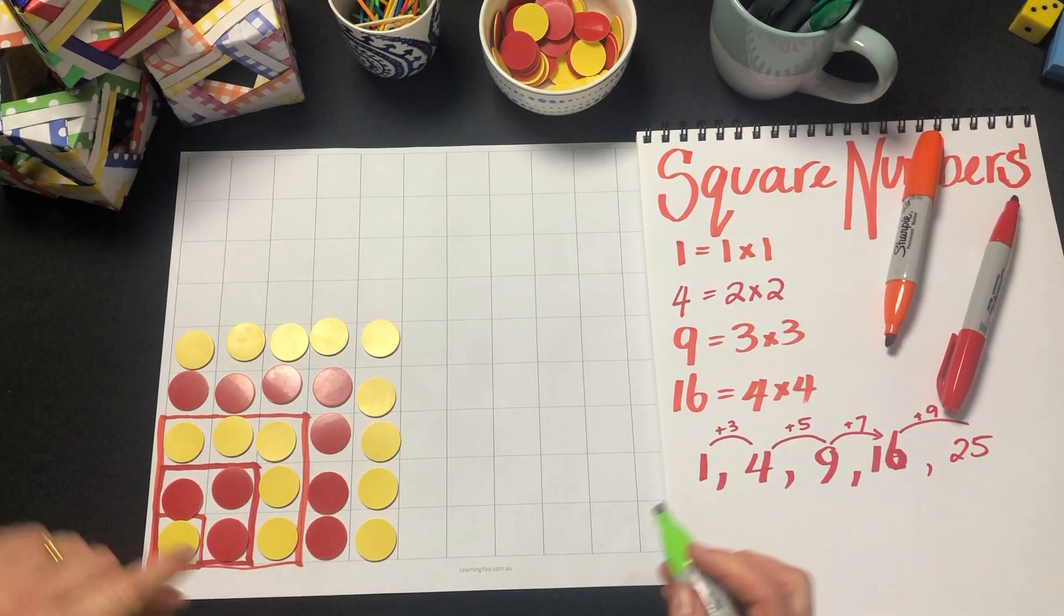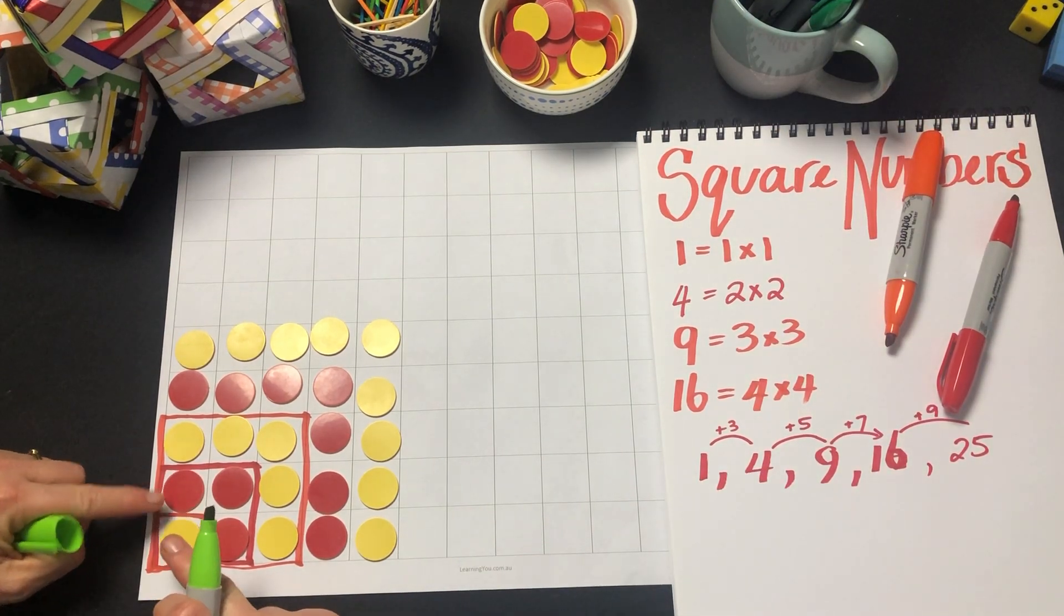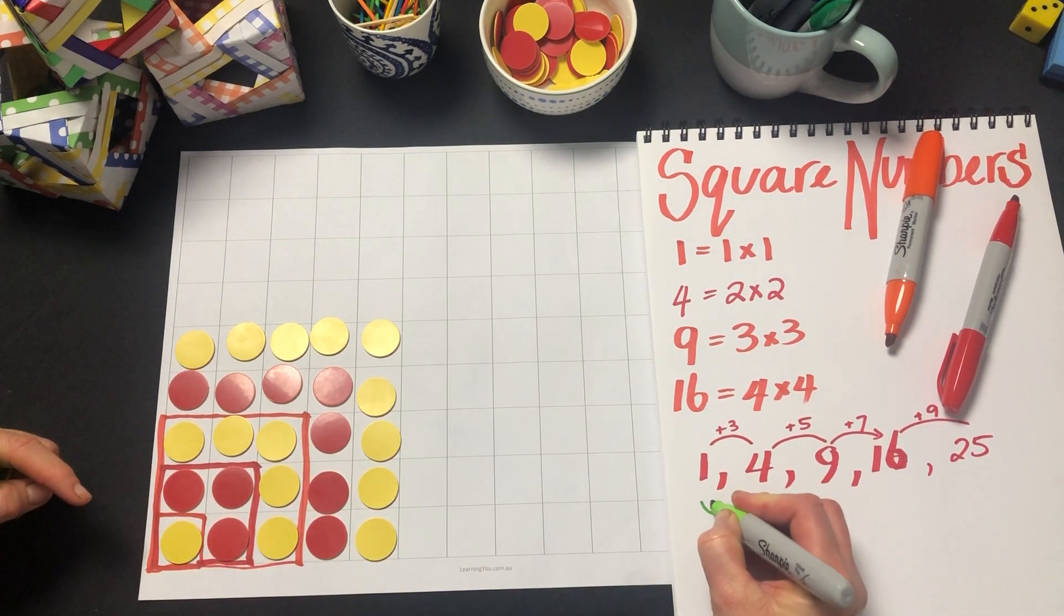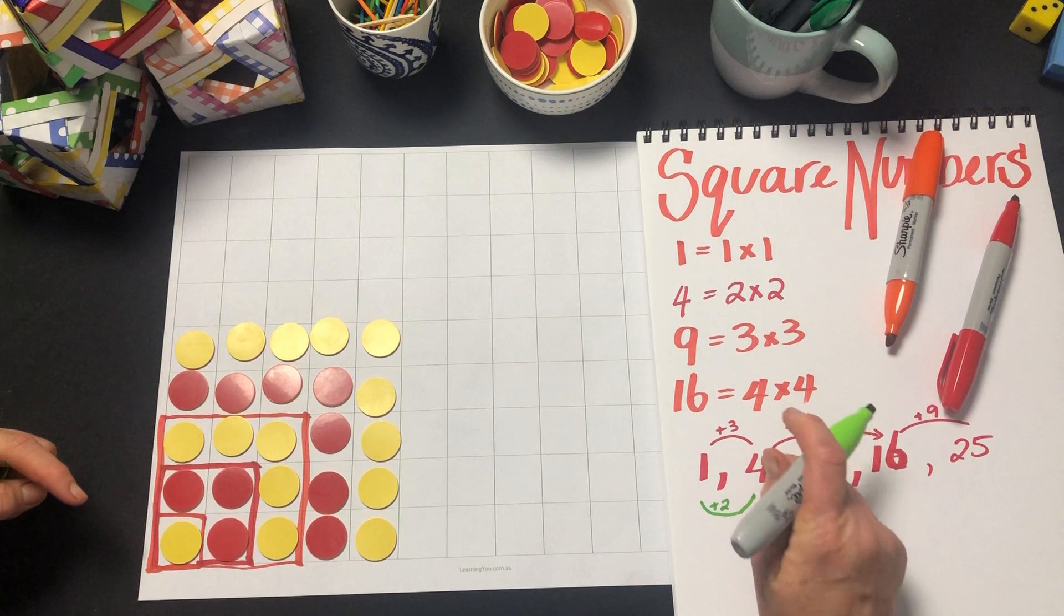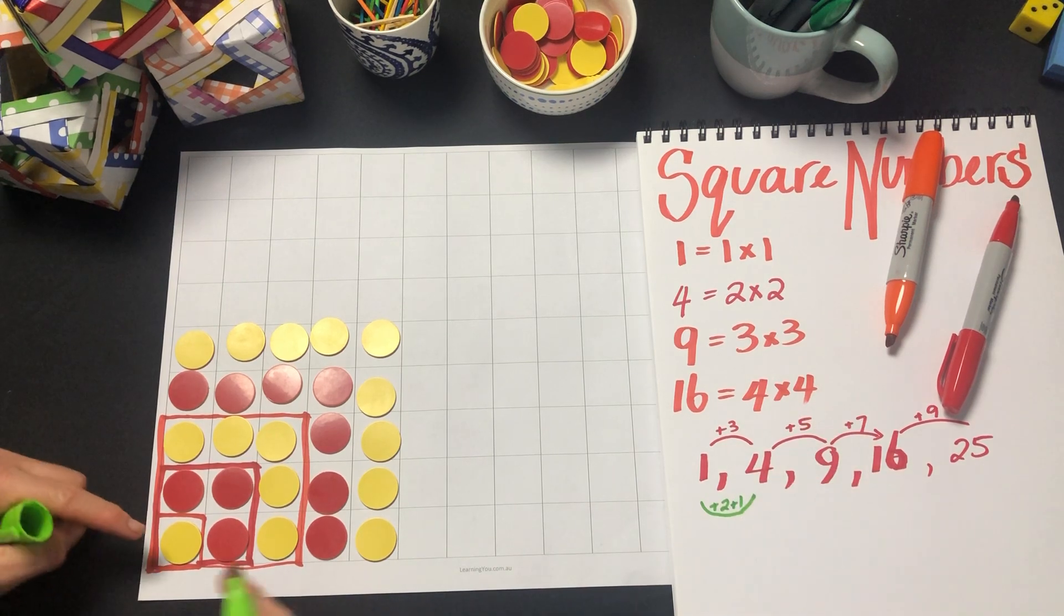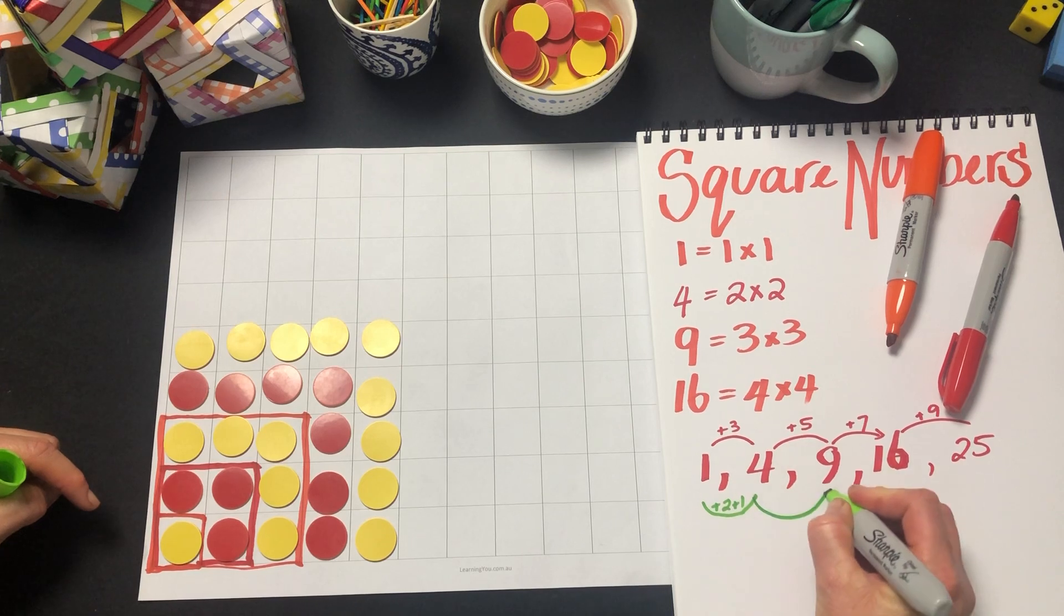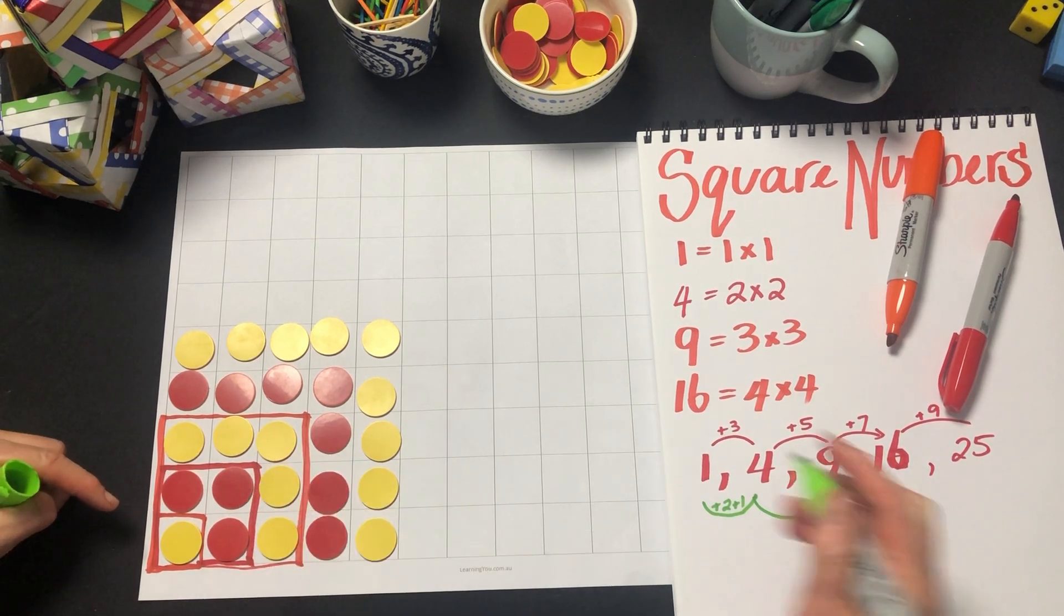What we saw as we grew the 1 into 4 was that we added 2, the side of 4, plus 1. 2 plus the 1 here, and from 4 to 9 we added the 3 plus 2.